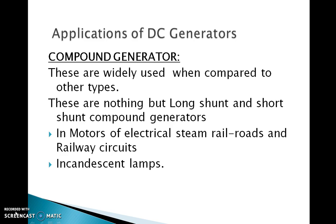Compound generators are further divided into long shunt and short shunt, and further into cumulative or differential types. The cumulative compound generator is the most widely used DC generator, because its external characteristics can be adjusted to compensate for voltage drop in line resistance. Such generators are used for motor drives requiring DC supply at constant voltage, for lamp loads, and for heavy power services such as electric railways.